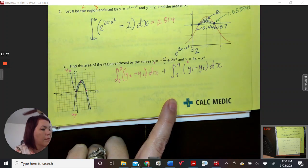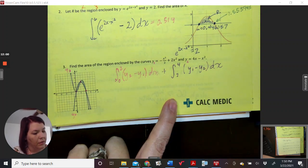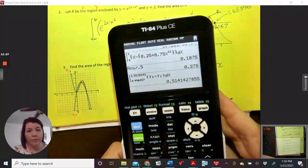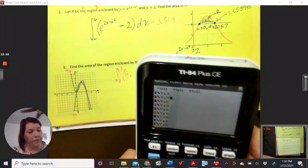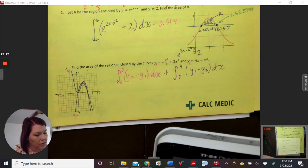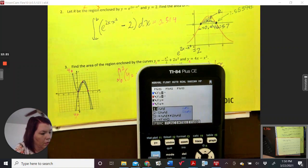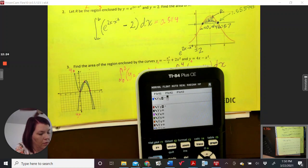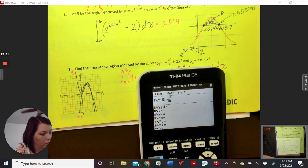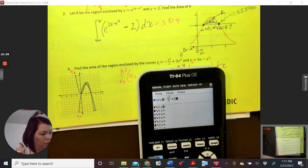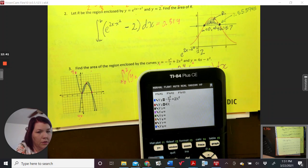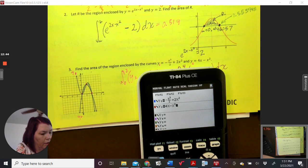So, let's see if I can clean up my handwriting here. Clear these out. We're going to replace them with those. So, Y1 will be negative X raised to the third, over 2, plus 2X squared. The next one will be 4X minus X squared. And there it is.